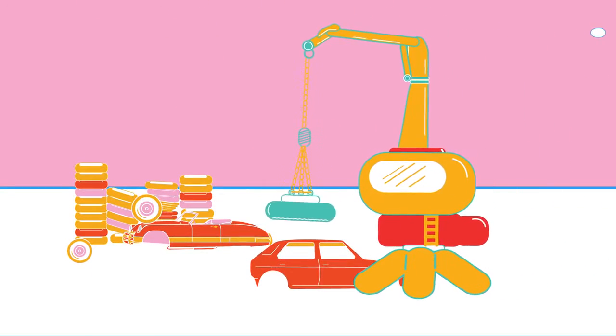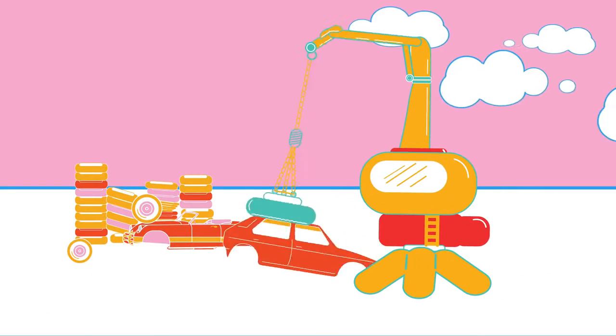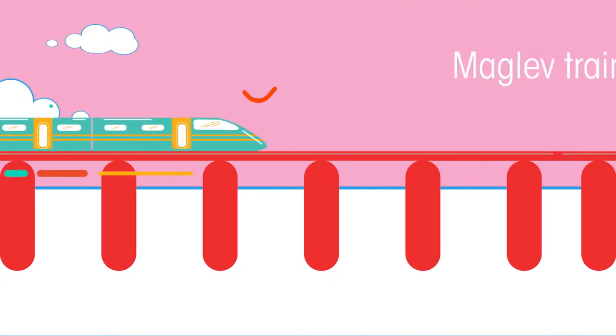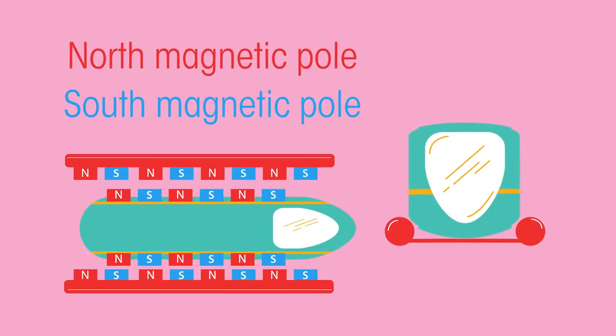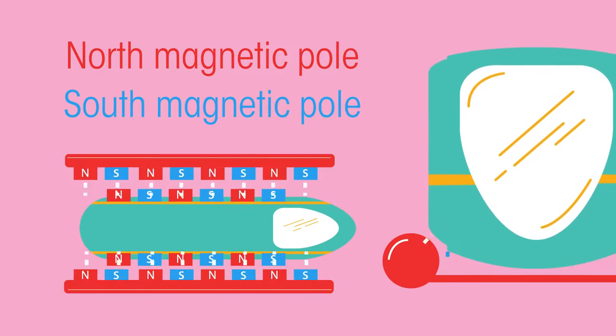Electromagnets have many uses, from moving cars in a scrapyard to high-speed maglev trains. The trains are suspended above the rails by strong electromagnets, reducing friction between the train and the track, and there are many other uses as well.